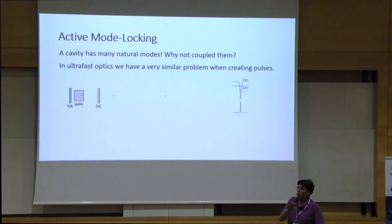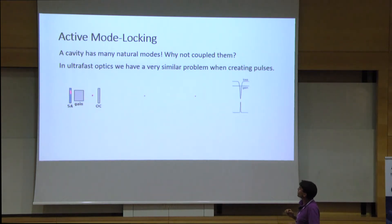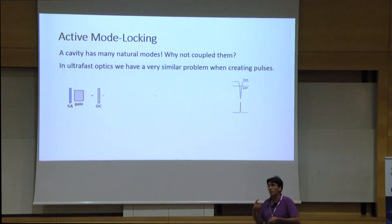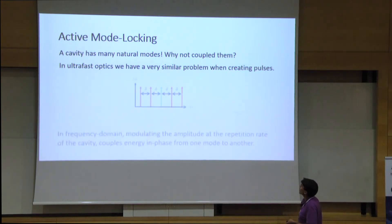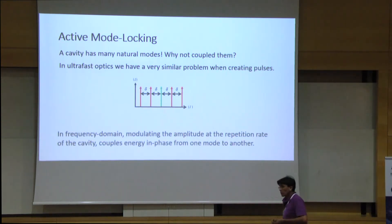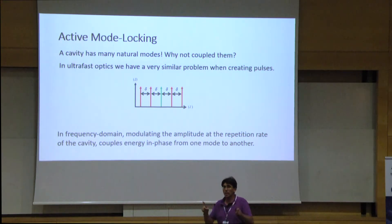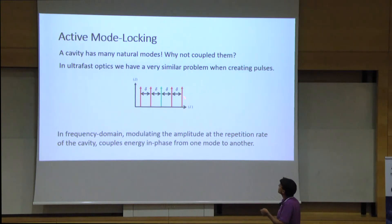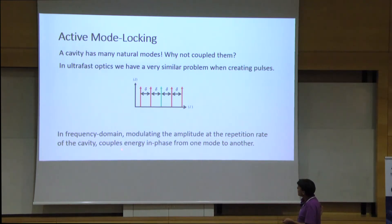We move to lasers and talk about how we make lasers oscillate on many modes — we do that by mode locking. With some kind of saturable absorber or shutter inside, the laser is forced to oscillate in pulses. Pulses are inherently many modes — this is how we create ultra-fast pulses. In frequency, what this shutter does is couple nearby neighbors, generating coupling between frequencies. Energy is coupled in phase from one mode to the other, and this pushes the laser toward pulses.